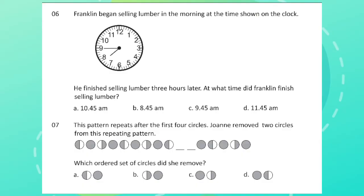Question 7: This pattern repeats after the first four circles. Joanne removed two circles from the repeating pattern. Which order set of circles did she remove?